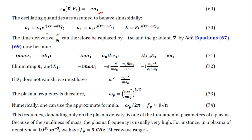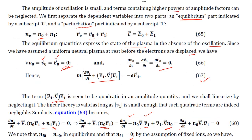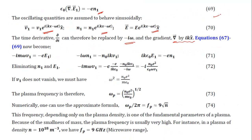Taking the velocity, charge density, and electric field as oscillatory — exponential form — then ∂/∂t is replaced by -iω and the gradient is replaced by ik_x. Equations 67, 68, and 69 are then substituted accordingly. Eliminating n₁ and E₁, if v₁ does not vanish, we get ω² equal to a specific expression.